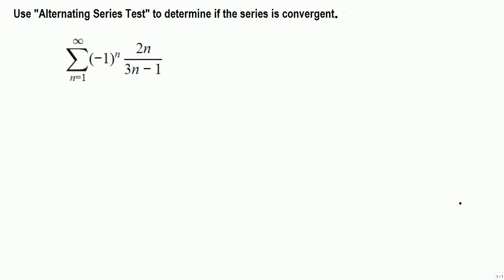Use alternating series test to determine if the series is convergent. Sigma of a_n, everything is a_n, and this part is just b_n. So we assume b_n to be 2n over 3n minus 1.